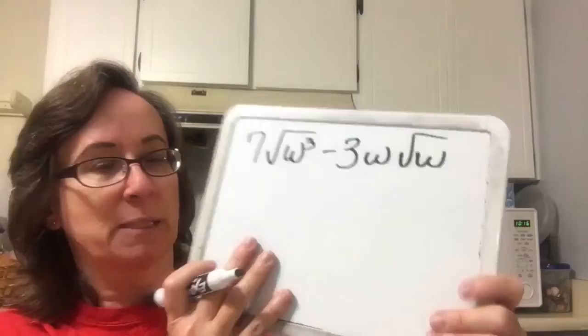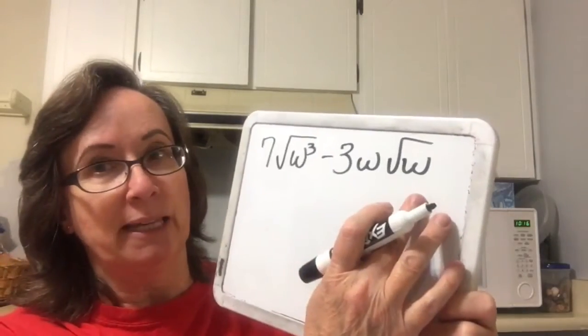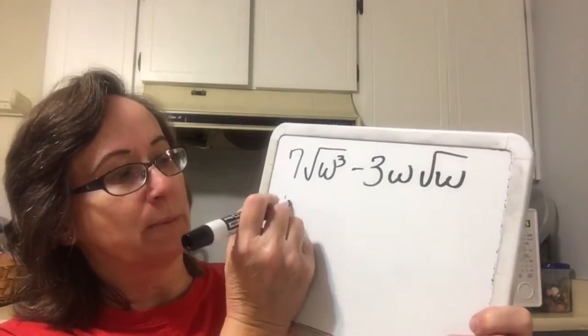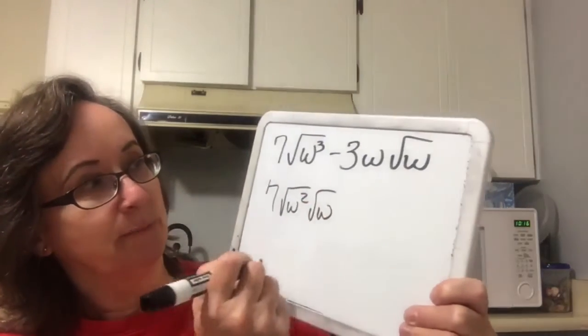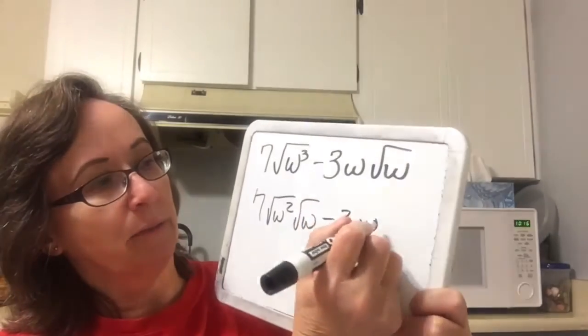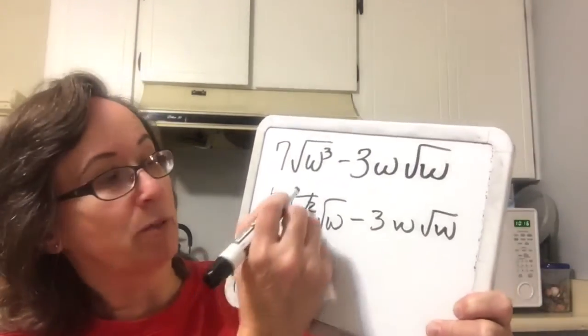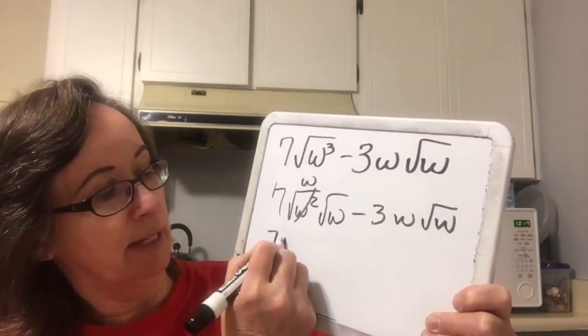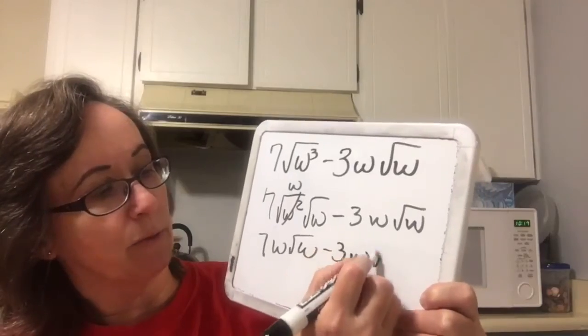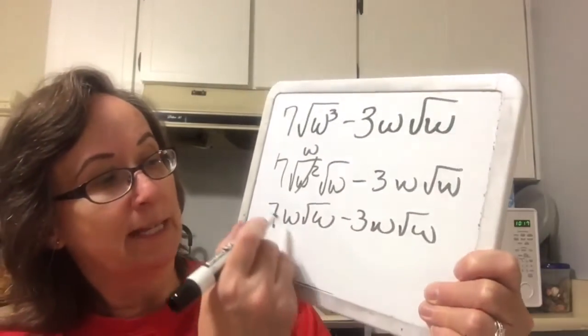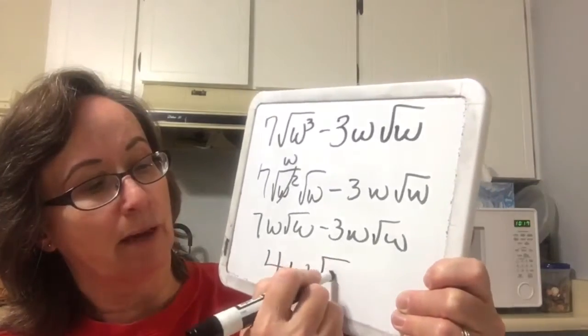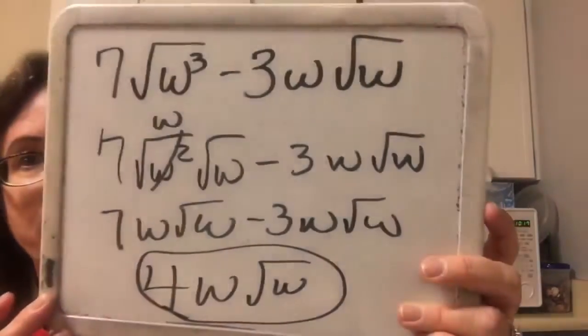Now, continuing to add and subtract radical expressions — we have two unlike expressions, but will this one simplify to be like the other? We're going to break this one up: 7 square root of w squared times square root of w, minus 3w square root of w. Now, the square root of w squared is just w, so we get 7w square root of w minus 3w square root of w. They are like terms — they both have a w and a square root of w — so 7 minus 3 is 4w square root of w.